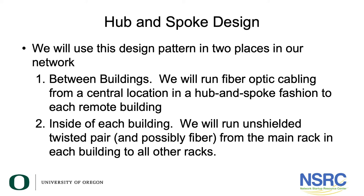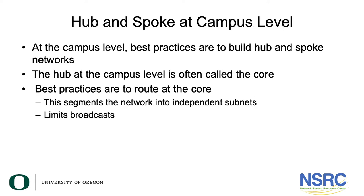We're going to use this hub-and-spoke design pattern in two separate places. One is on your campus between buildings: we will run fiber optic cabling from your central location out to each remote building in a hub-and-spoke fashion — not from one building to the next to the next, even if that might be easier. Inside each building, we'll run unshielded twisted pair cabling — Cat5, Cat5e, Cat6 — and possibly fiber from a main rack to all other racks, and from each rack out to station outlets in offices. The hub at the campus level is called the core — your central location with a small server room — and our best practice is to route at the core.